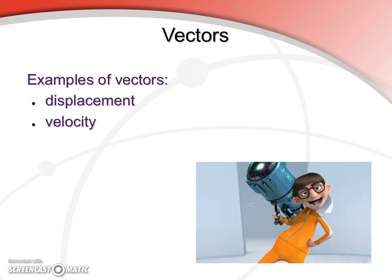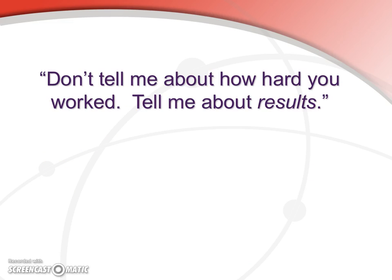Some examples of vectors: the things that we've already covered in a scalar fashion — displacement and velocity. But there are others of course. You can probably think of some of those yourself. Acceleration, force — lots of other quantities have a direction applied to them.